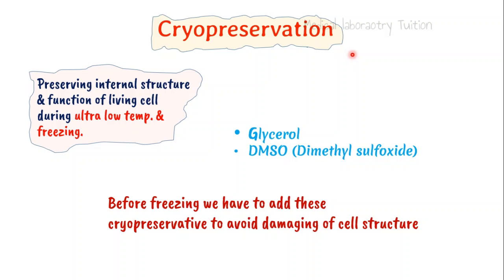Another technique is cryopreservation. Cryo means coldness or freezing. For very rare blood groups we have to store RBCs for a longer time, such as one year. In cryopreservation, the internal structure and function of living cells are maintained at ultra-low temperatures. We use glycerol as a cryoprotectant for RBCs. In simple terms, after collecting blood in a blood bag at 4°C, we add glycerol to maintain the internal structure of living RBCs. For platelets we use DMSO — dimethyl sulfoxide. Before freezing we add these cryopreservatives — either glycerol or DMSO — to avoid damaging the cell structure. Cryopreservation plays a very important role in blood component preparation.